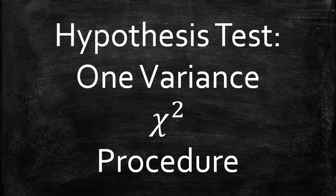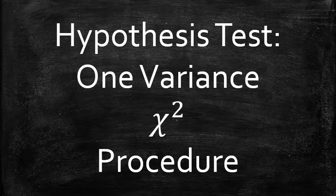Next, I will show how to apply the one-variance chi-square procedure to test a statistical claim about a population variance. Consider the following example.